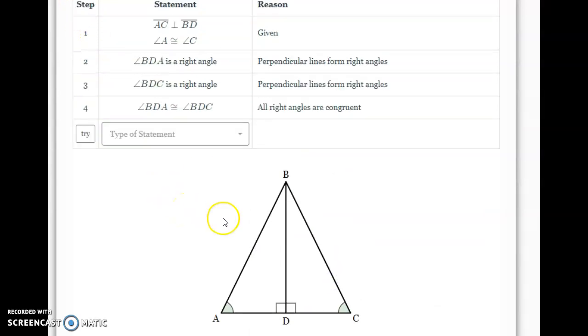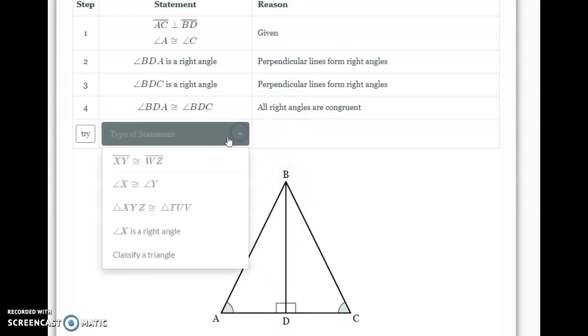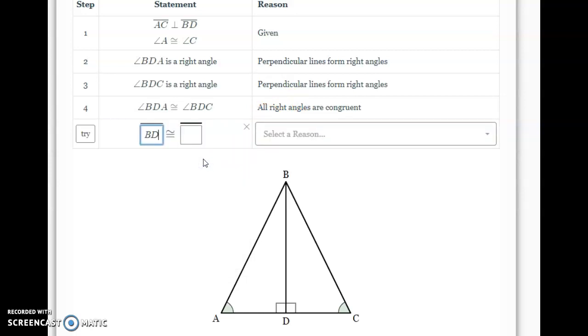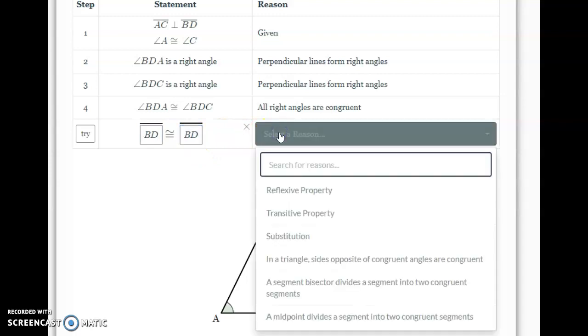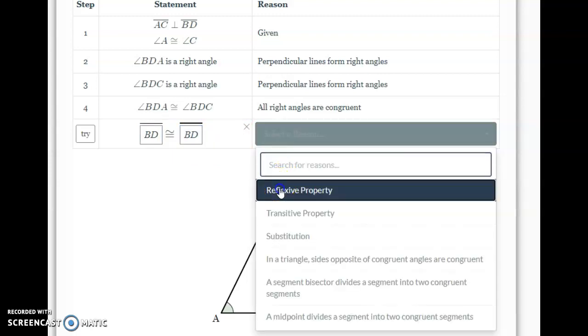Now the last thing that I'm going to need before I can state that these triangles are congruent is that BD, their shared side, is congruent to itself. So, I'm going to pick this congruent segment statement, and I'm going to type in BD and BD. And the reason when something is congruent or equal to itself is always the reflexive property.